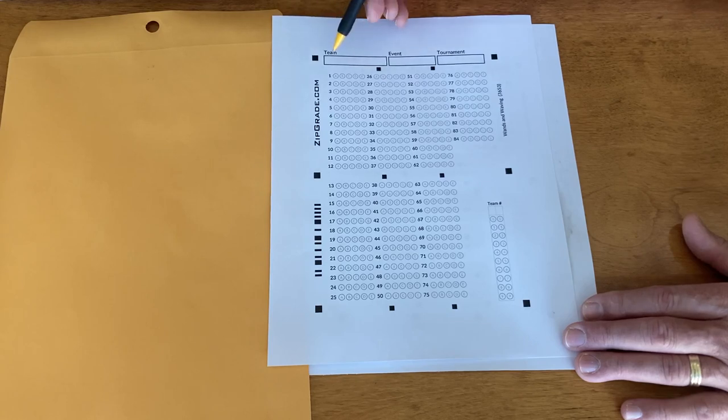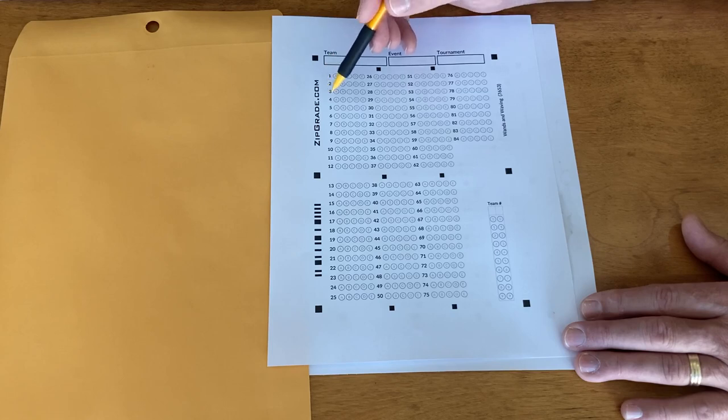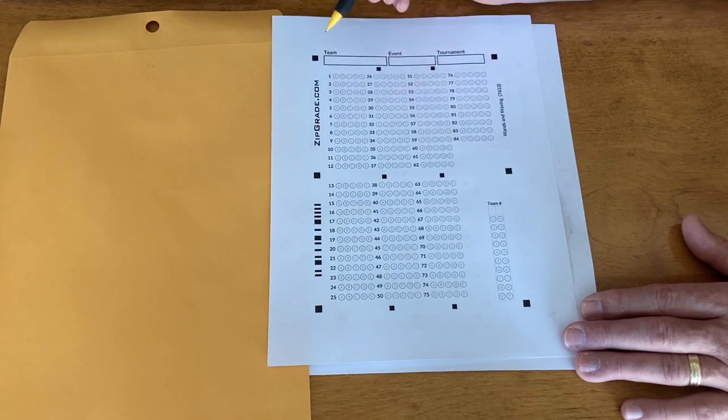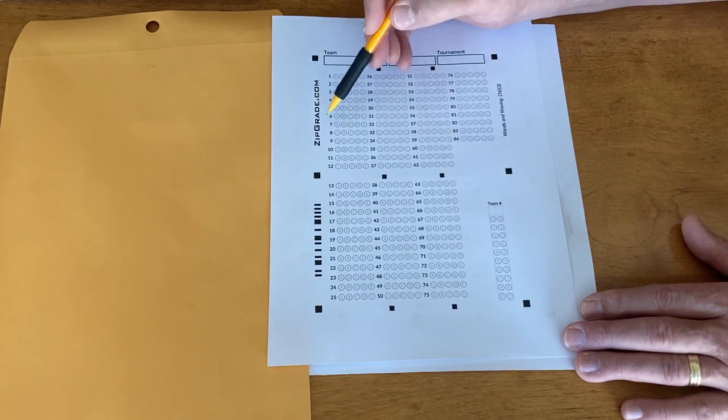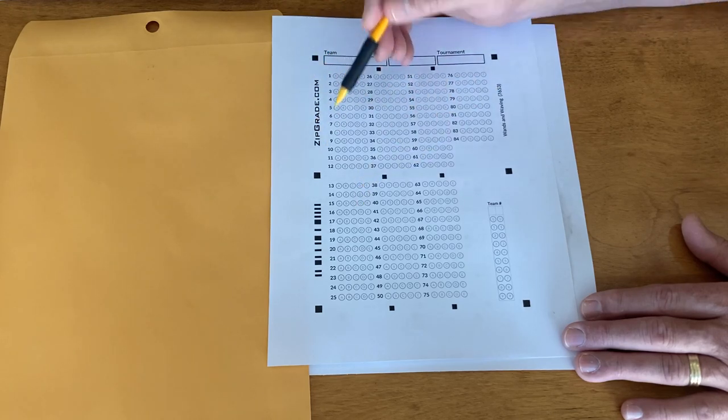One of the things that you ought to be training your kids to do is to make sure that when they're starting the test, they start at the correct number. If it's a station-based event, there's always the likelihood that they're starting at a question different than number one, and you need to make sure they understand they might be starting at question nine or question 15.